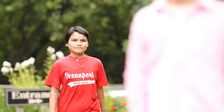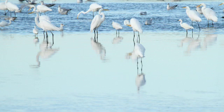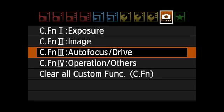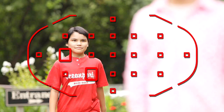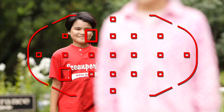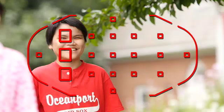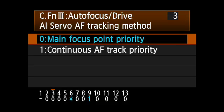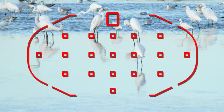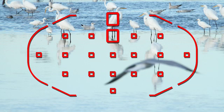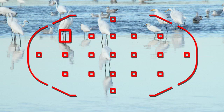AI Servo AF Tracking Method. Any time you have more than one focusing point selected, this custom function tells the camera how to deal with any new subjects that enter the focus area. The default setting, Main Focus Point Priority, means the camera will try to refocus on any new subjects that are closer than the subject you've been tracking. With Continuous AF Track Priority, the camera will tend to ignore anything between you and your subject, especially if any of the outer points pick up a nearby subject.